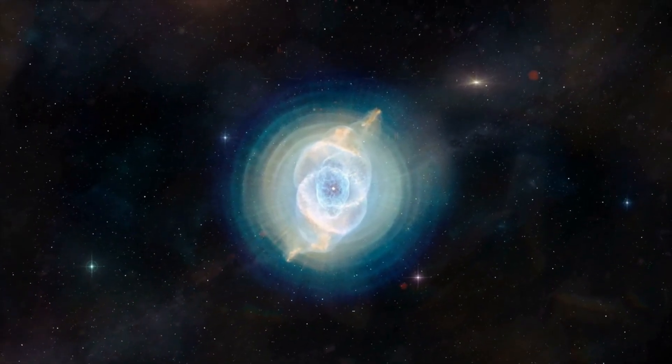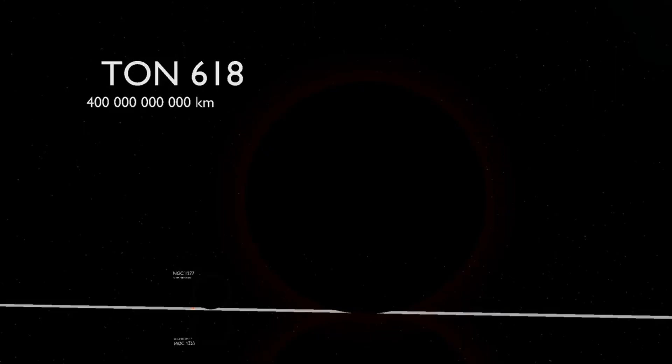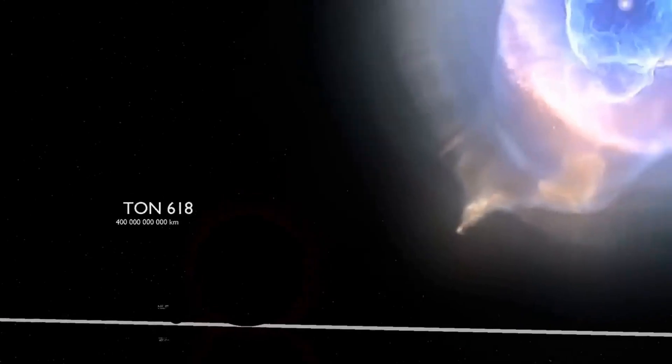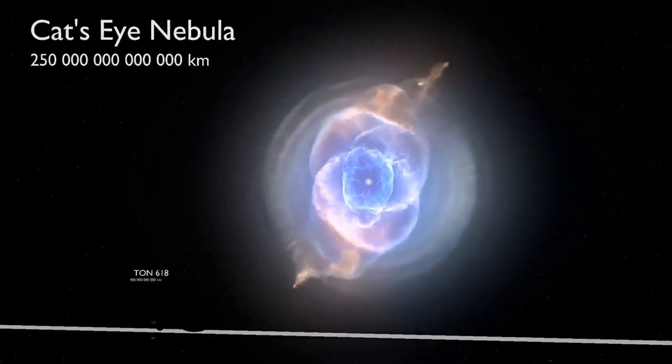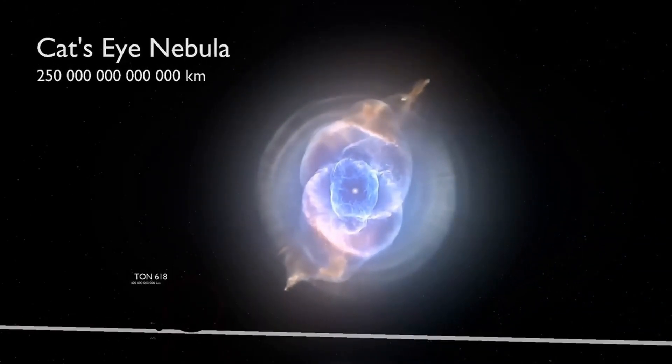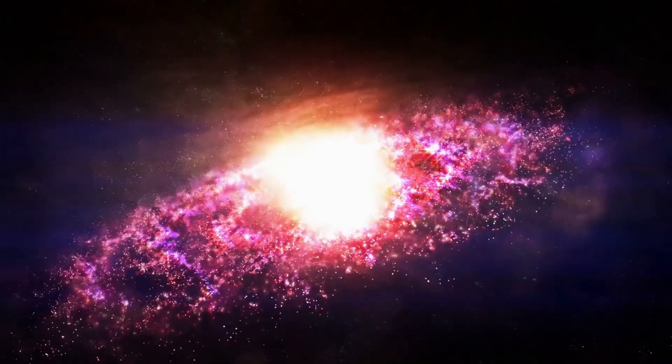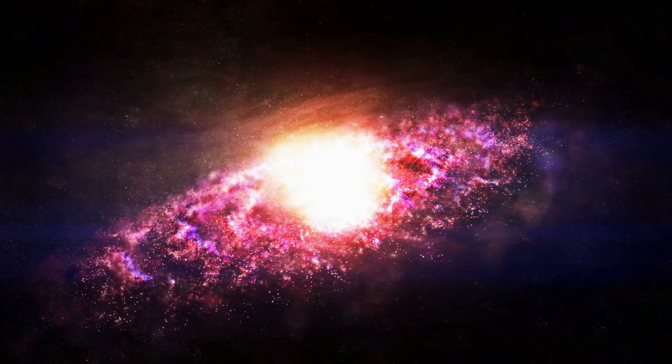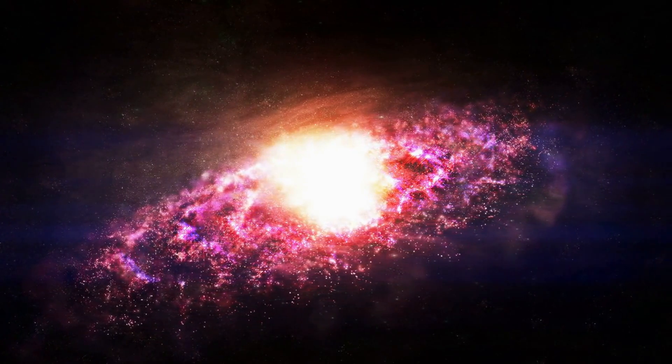Moving on, we have the Cat's Eye Nebula. The Cat's Eye Nebula has a diameter of 0.4 light-years. From now on, our distance unit will be changed to light-years. Nebulae are the products of supernova explosions. According to Earth's time, the Cat's Eye Nebula exploded about 1,000 years ago. The mass of the star before its evolution is estimated to be about five times that of the sun.